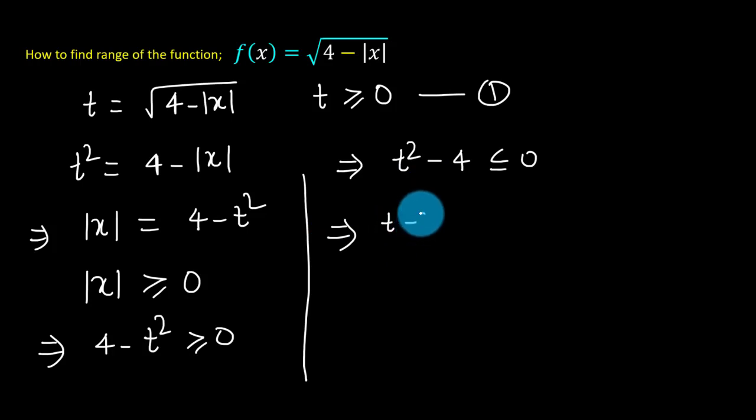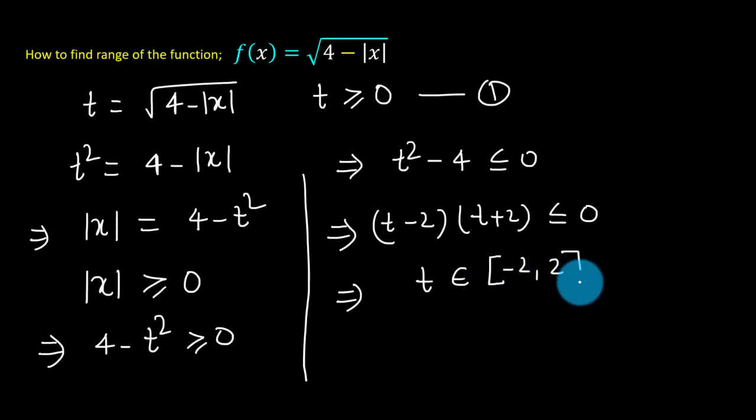Now we can factor the expression on the left hand side and we get t minus 2 times t plus 2 is less than or equal to zero. This symbolizes that t belongs to the closed interval negative 2 and 2. This is our equation 2.